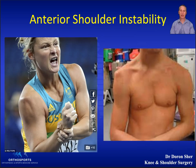Anterior shoulder instability is the most common form of shoulder instability and it is usually because of a traumatic injury such as a collision or fall on an outstretched arm with the shoulder abducted and externally rotated.